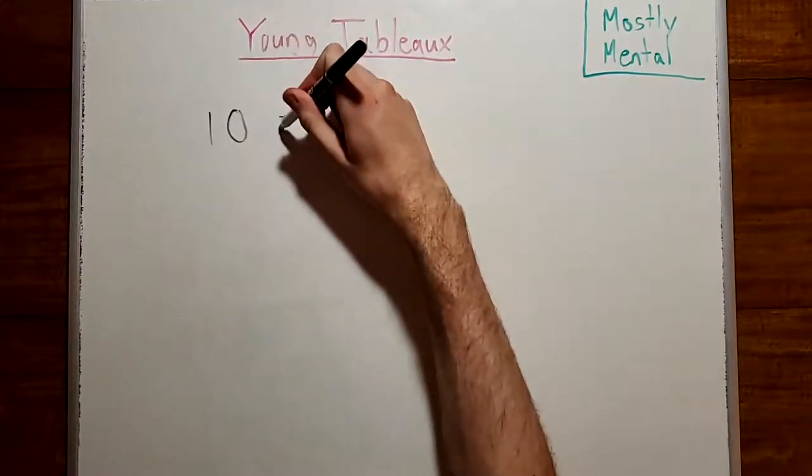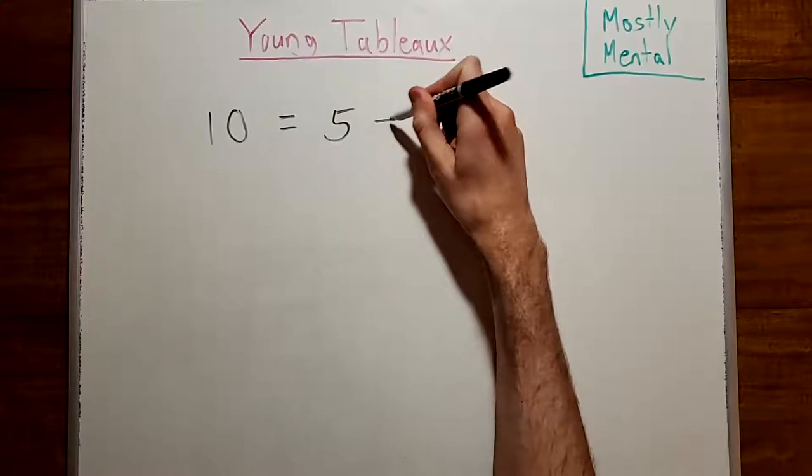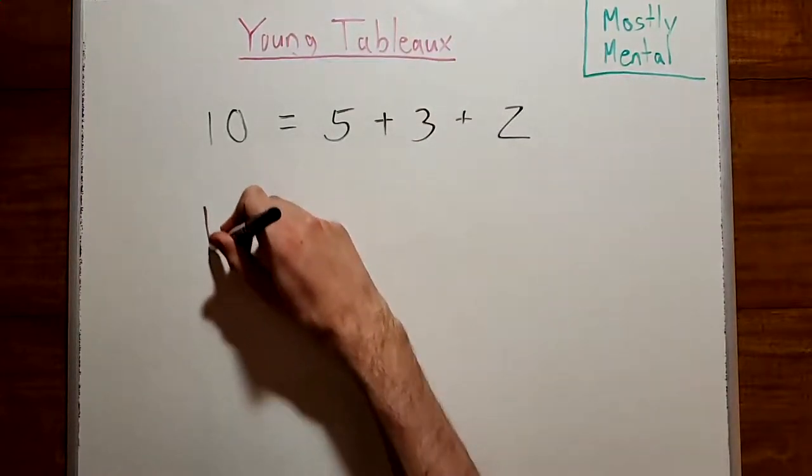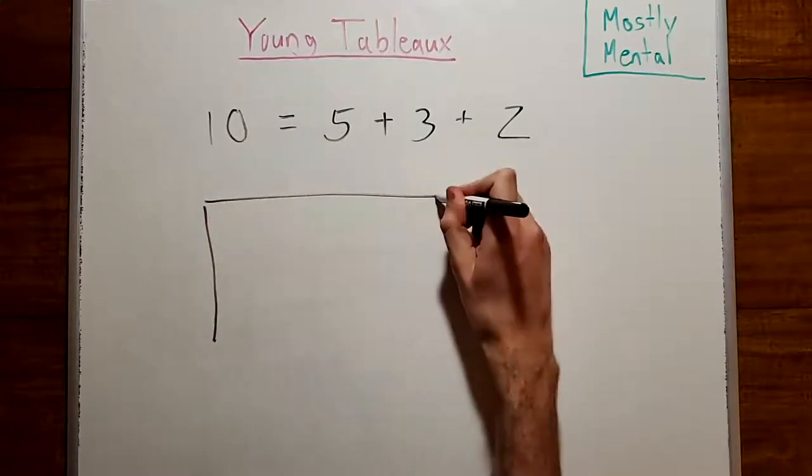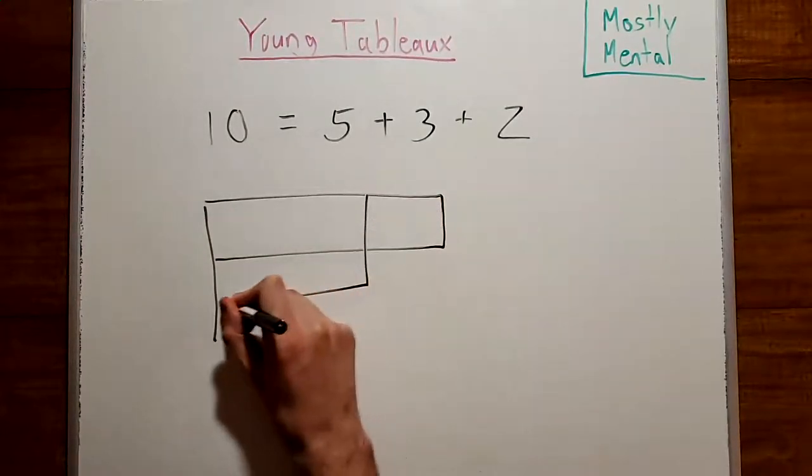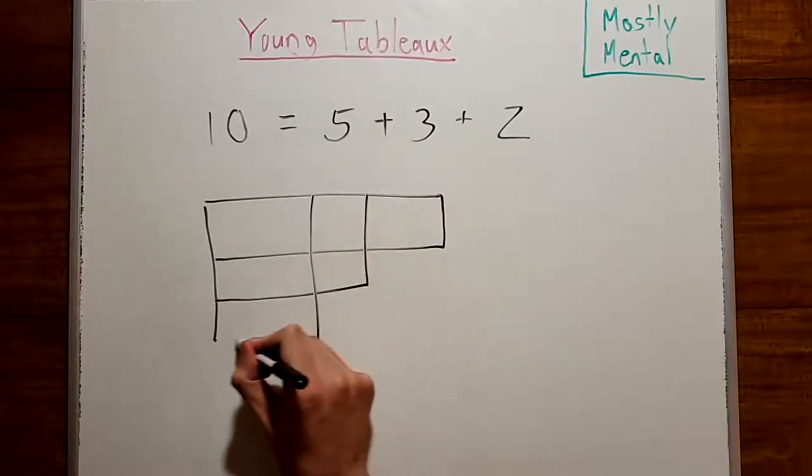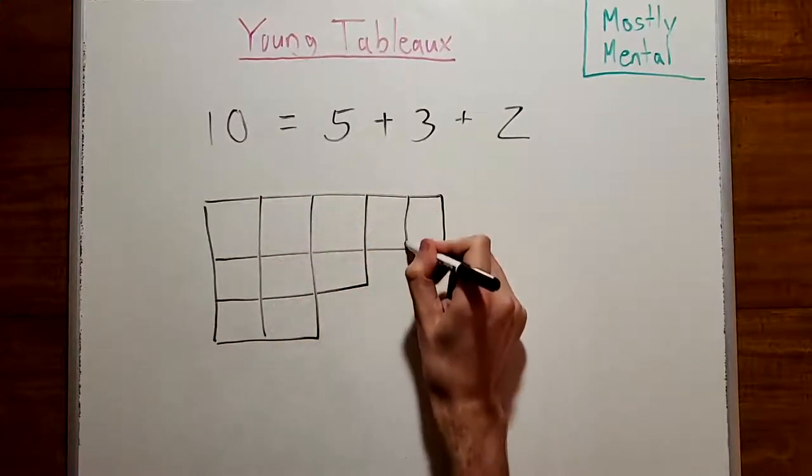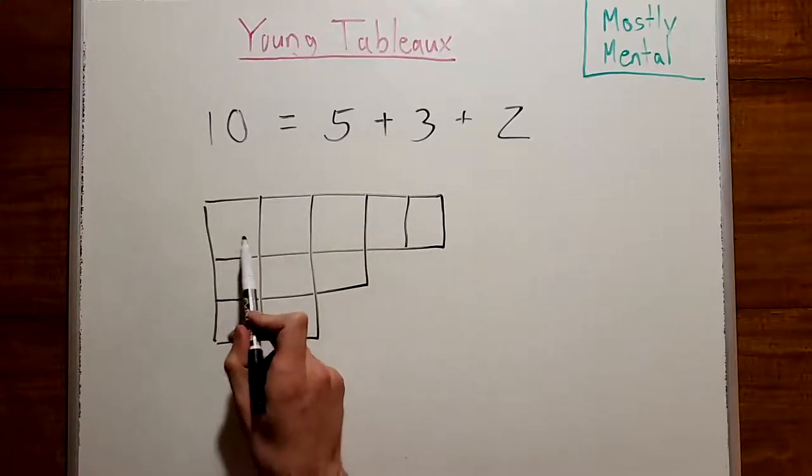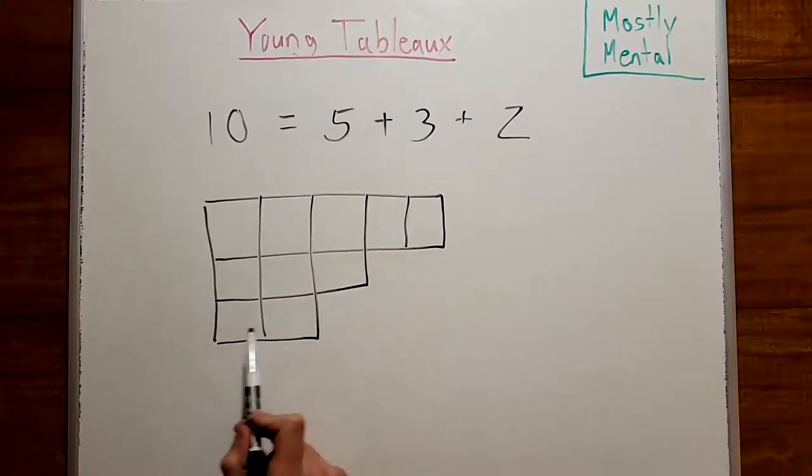Given a partition, that is a division of a number into smaller parts, for example, 10 is 5 plus 3 plus 2, the associated Young diagram is a grid of boxes where the length of each row is equal to the corresponding part. So here we have 5 plus 3 plus 2.